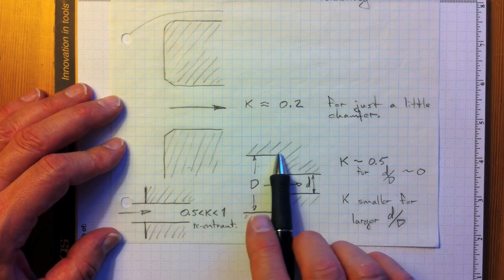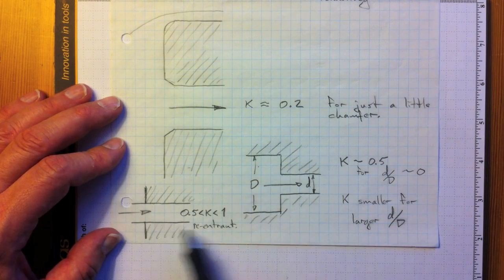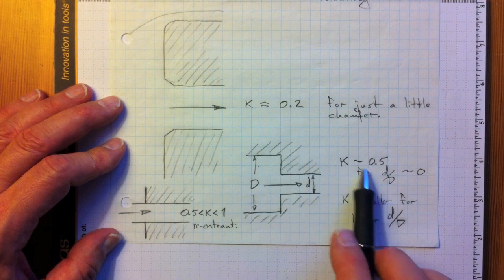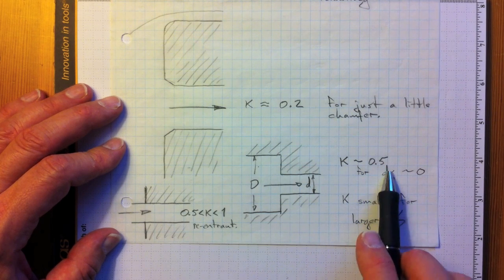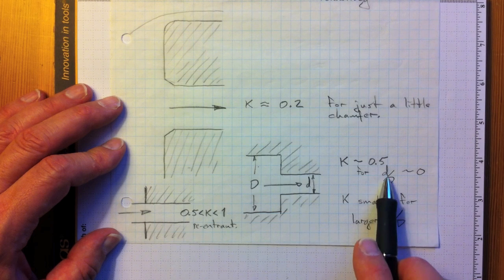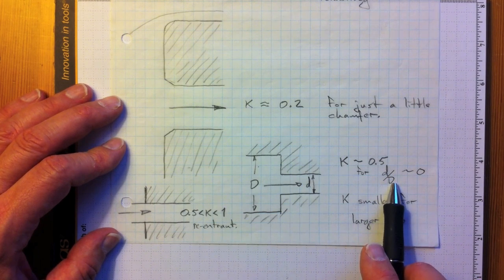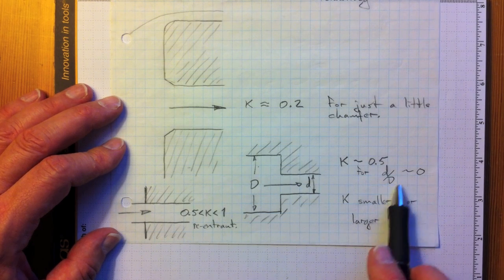Now if we're looking at a sudden contraction, not coming from an infinitely large reservoir, but from a larger pipe into a smaller pipe, then k will be around 0.5 for the diameter ratio getting towards 0, that is the small pipe is much, much smaller than the large pipe. And that's really the same situation as a sharp entry from an infinite reservoir.